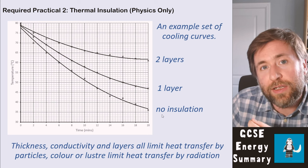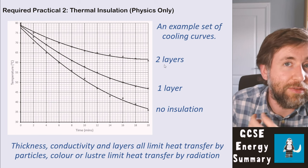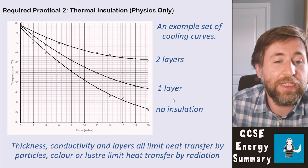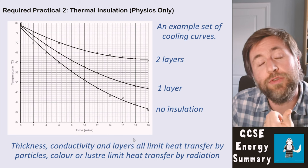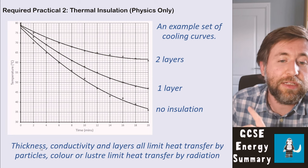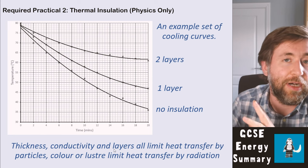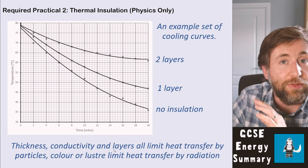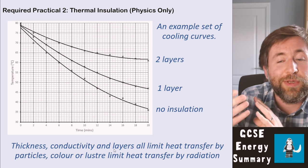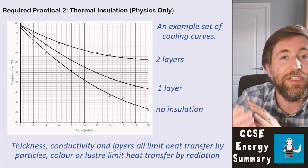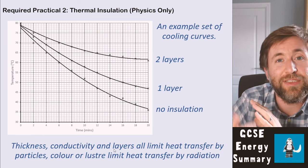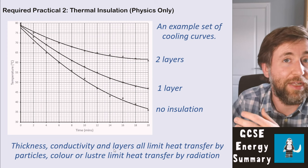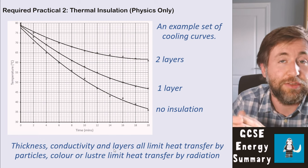When analysing why different layers or factors cause different rates of cooling, consider two mechanisms. Thickness, conductivity, and layers all limit heat transfer by particles knocking into each other. Colour or lustre limits heat transfer by radiation — infrared radiation. Dark, matte materials emit infrared at a higher rate.